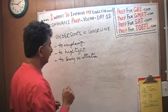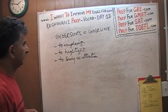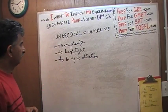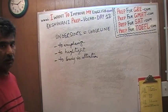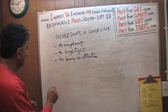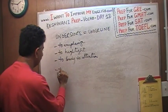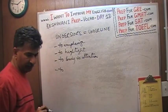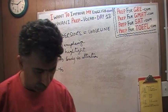The word 'underscore' comes from the old days when we had typewriters. The key that people used to hit to underline a word was called the 'underscore' key. Therefore, underscore means to underline — underline and underscore are synonyms. It means to emphasize, to highlight, to bring to attention.